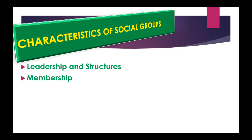Next we have marks of identity. Many groups mark their members from non-members. Uniforms are an obvious example and are used by schools, scout and guide groups, sports, drama and dance clubs. The armed forces, the police, and other emergency services also have uniforms to distinguish them from members of the public. Other marks of identity include badges.